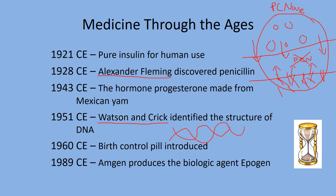Watson and Crick were able to find the structure of DNA — the double helix. We now know that DNA is like hardware, and it's the software that determines what genes are turned on and off. Amgen produces Epogen — erythropoietin — which is a hormone normally released by the kidneys that stimulates red blood cell production. Red blood cells carry oxygen, so if you're going through cancer therapy and have a low blood cell count (anemia), they'll give you Epogen to increase your red blood cell count.